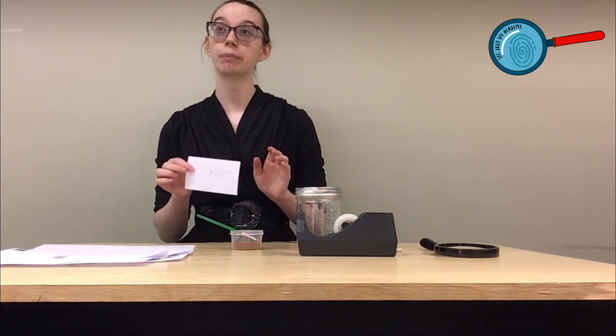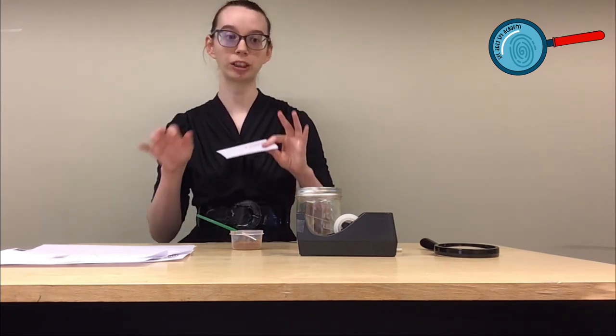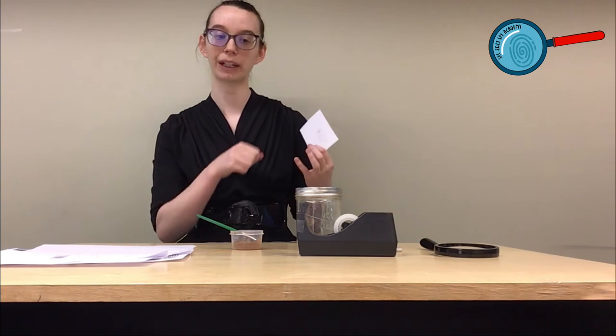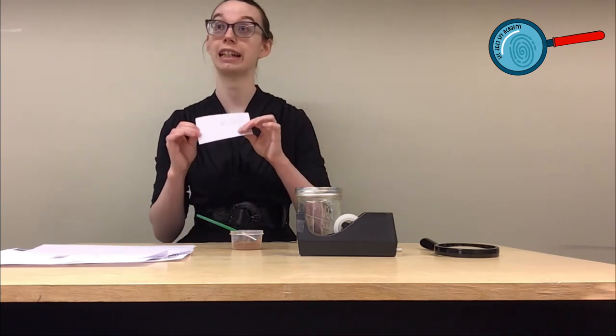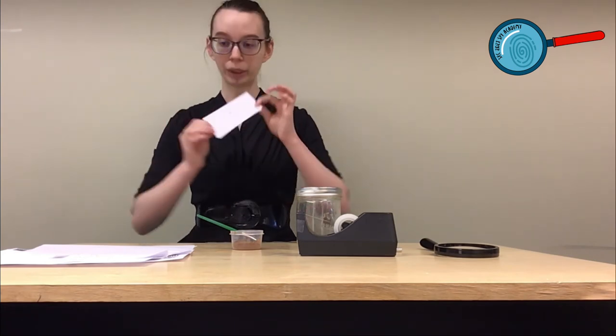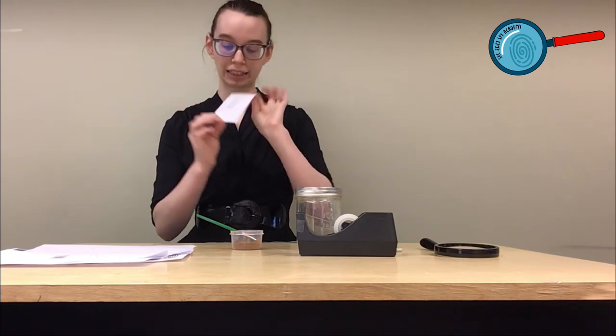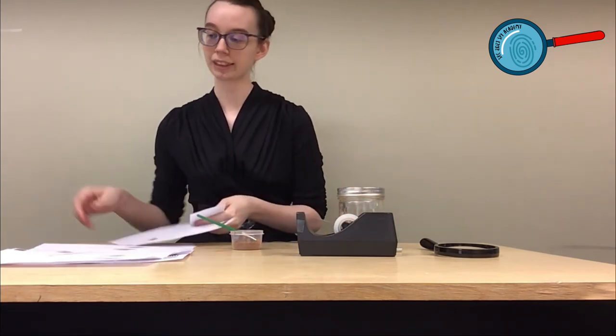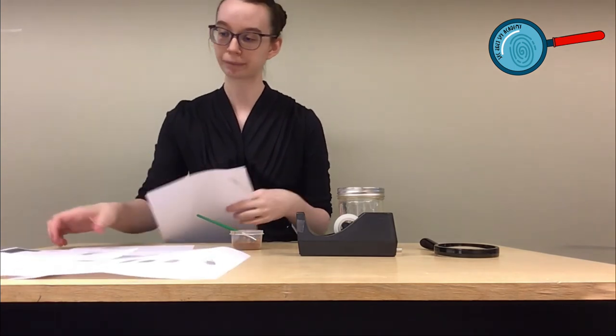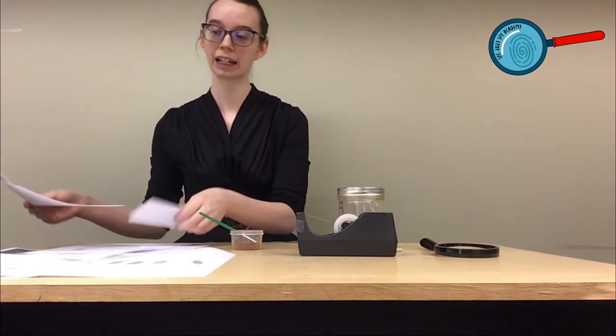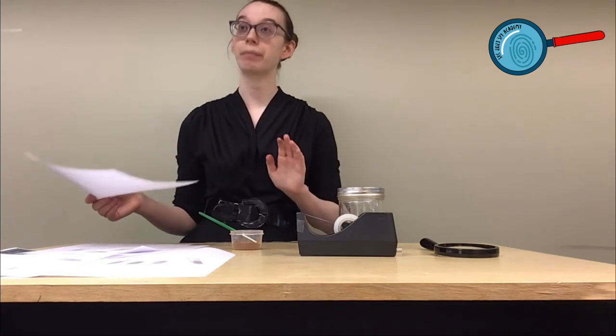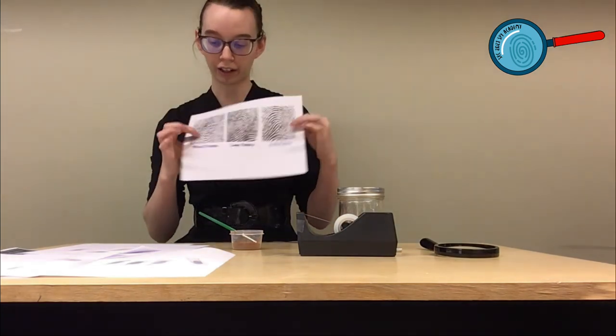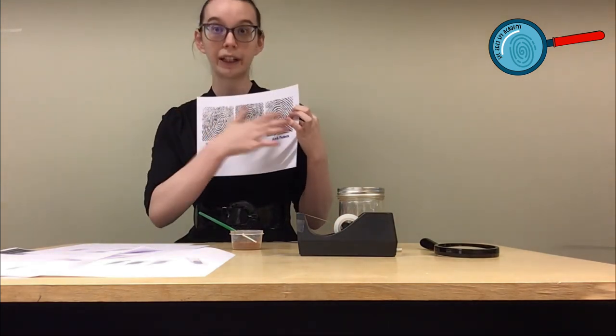Now this might take some practice to get used to not smudging the fingerprint or moving it either when you're pressing the tape down or moving it onto the index card. So once you have a fingerprint that is easy to see on your index card, you're going to examine it against your fingerprint database. Now fingerprints typically have three main patterns. So they are a whirl, a loop, and an arch.